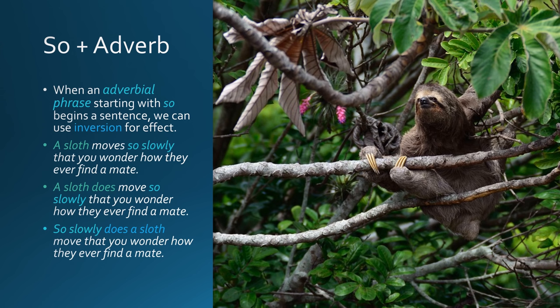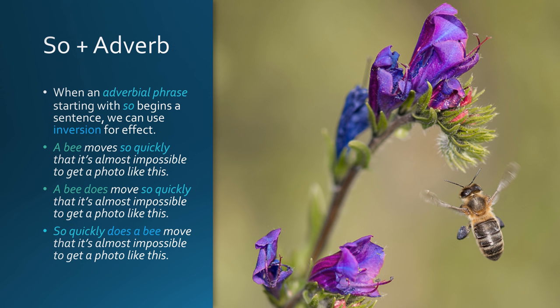So plus adverb: when an adverbial phrase starting with 'so' begins a sentence, we can use inversion for effect. 'A sloth moves so slowly that you wonder how they ever find a mate' — 'So slowly does a sloth move that you wonder how they ever find a mate.' 'A bee moves so quickly that it is almost impossible to get a photo like this' — 'So quickly does a bee move that it is almost impossible to get a photo like this.'